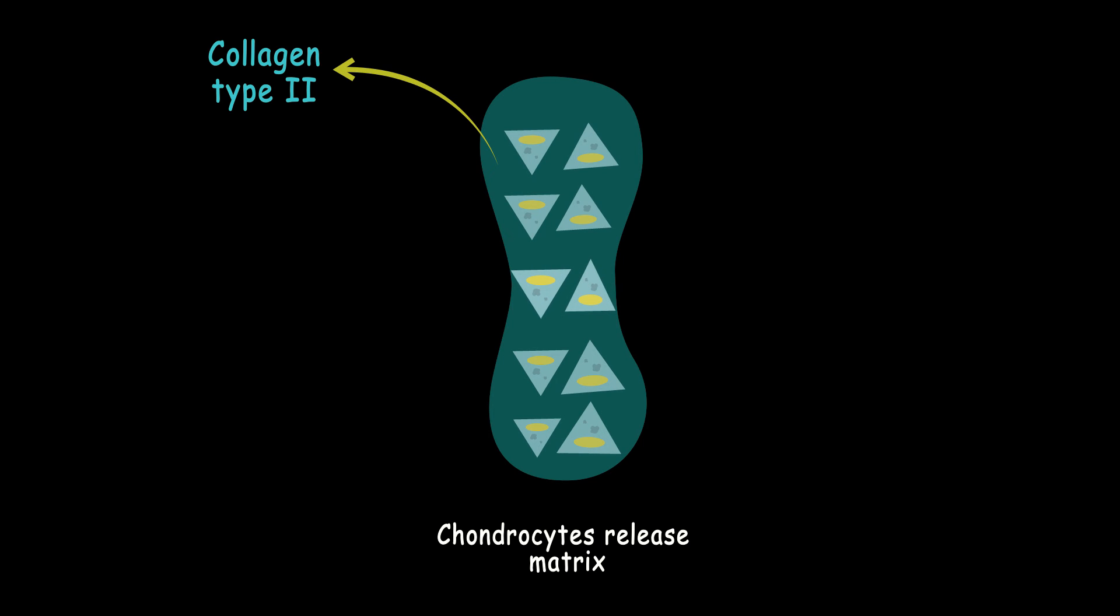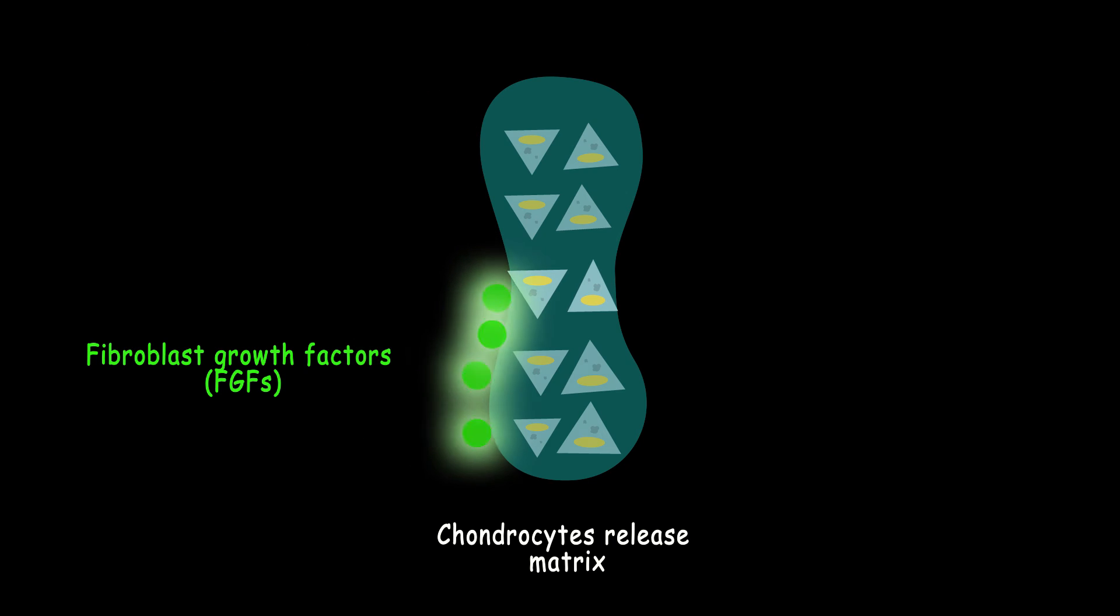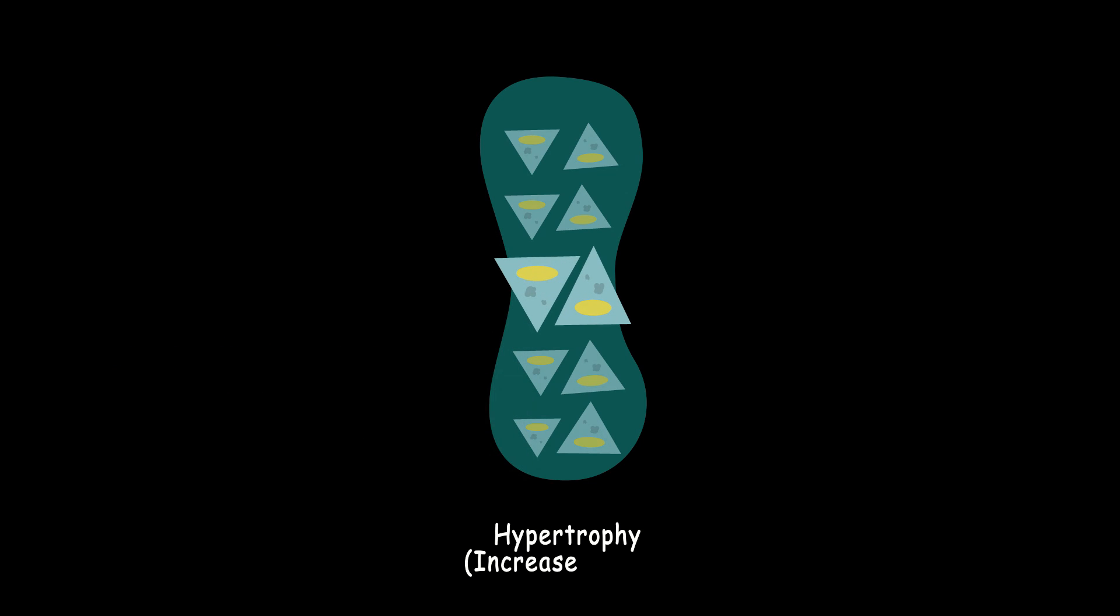The fibroblast growth factor decreases the proliferation of chondrocytes in the central area and they become hypertrophic. These hypertrophic cells release collagen type 10 and calcium phosphate granules which become cause for the growth of apatite microcrystals.